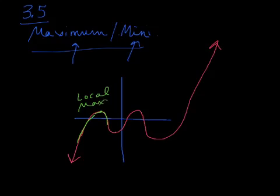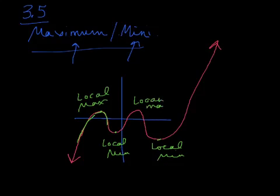Local minimums are your valleys — the low points on the graph. Any time your graph changes direction, that's a maximum or a minimum. So that would be a local minimum, this would be a local minimum, and then we have another local max. So we have those points — that's what a local is.